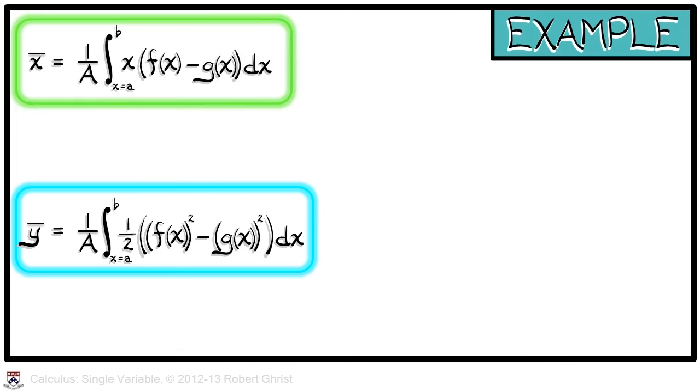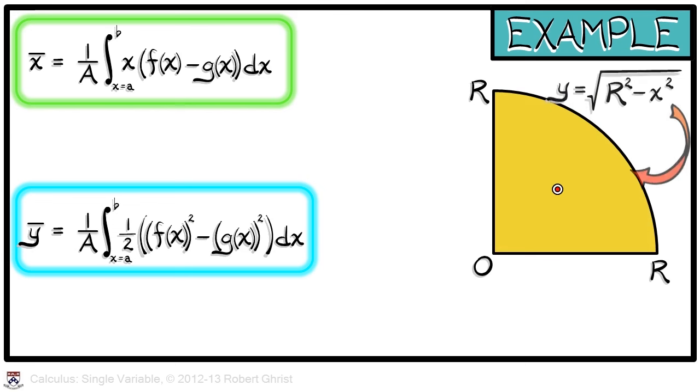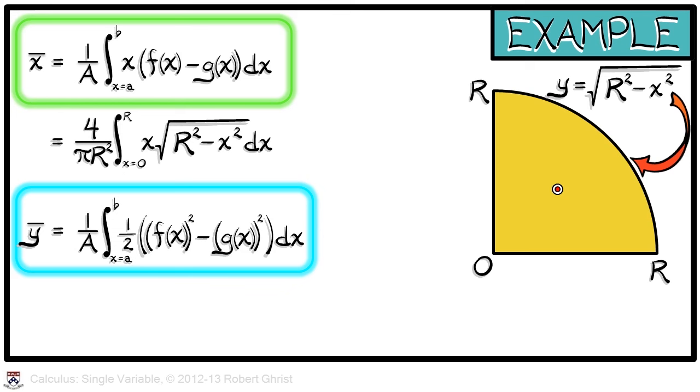Let's look at this in a specific example. That is, we'll take a quarter disk of radius r in the plane. We have to compute x bar and y bar. This is the region between two curves, where on the top we have y equals root r squared minus x squared. On the bottom, of course, we have y equals 0. To compute x bar, we take 1 over the area, that is, 4 over pi r squared, since it's a quarter circle, times the integral as x goes from 0 to r of x times f of x minus g of x. That is, x times root r squared minus x squared dx.